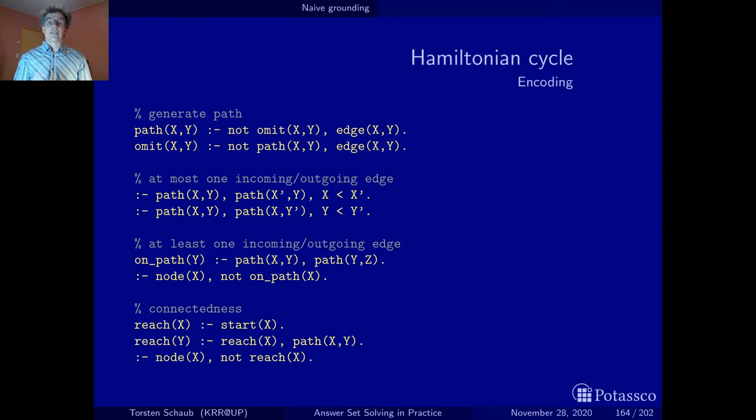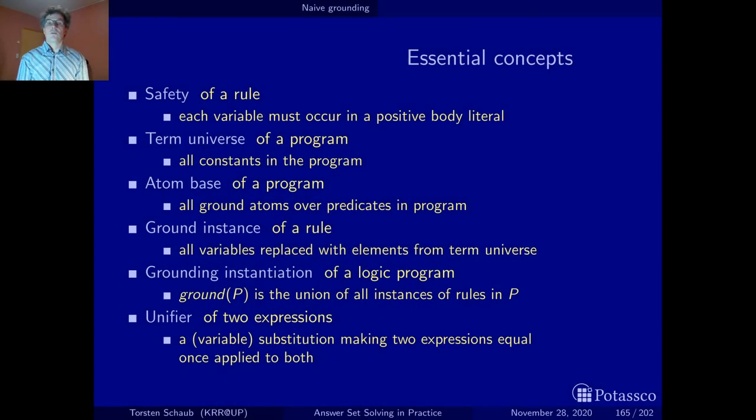So this is now an encoding of the Hamiltonian cycle problem in plain normal logic problems without aggregates or cardinality constraints. And it's for the purpose of illustration, since we want to illustrate grounding algorithms for normal rules. Now we need a couple of concepts and let's check them out next. In fact, you've seen already all of these concepts except for the very last one in the introduction, when we already talked about grounding for the very first time. So an important concept for the grounding algorithms we'll be looking at is safety. So a rule is safe if each of its variables occurs in a positive body literal. And accordingly, a program is safe if it consists of safe rules only. This is a very important concept and we rely on this, or let's say the grounding algorithm that we look at, rely on this property.